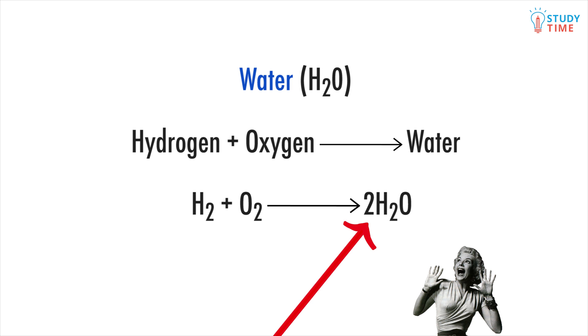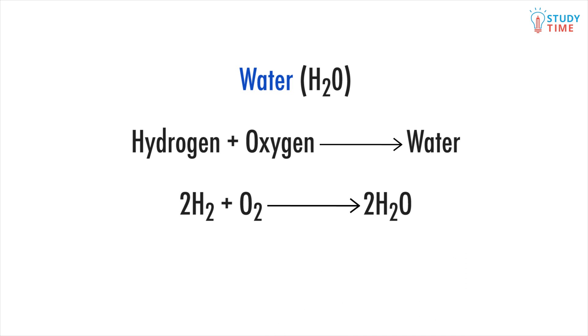One more step is needed to fix this. We will write 2 in front of the hydrogen molecule on the left. Now we have 4 hydrogen on each side, and 2 oxygen on each side.